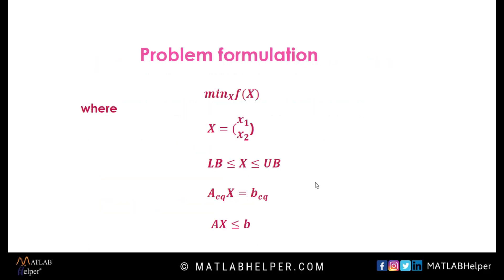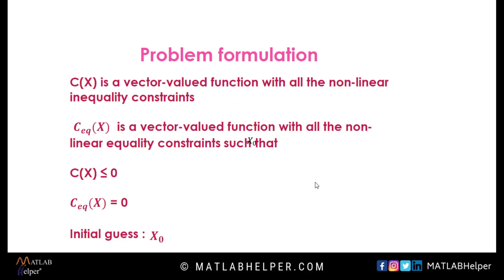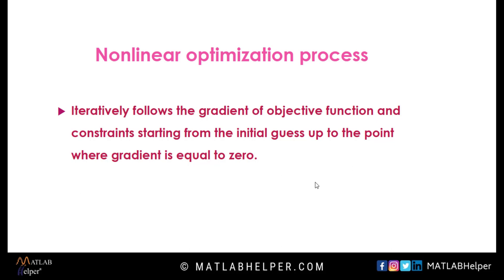The NLP solver in MATLAB uses the formulation as shown here. F is the objective function to be minimized with the design variables x1 and x2. LB and UB are the lower bound and upper bound respectively. AEQ and BEQ are the matrices specifying the equality constraints, and A and B are the matrices for the inequality constraints. In MATLAB, the nonlinear constraints are coded in a separate function with C(x) as a vector-valued function with all the nonlinear inequality constraints, and CEQ(x) as a vector-valued function with all the nonlinear equality constraints satisfying the conditions as shown here. NLP problems are iterative, which means that it starts with an initial guess as a starting point x0 for what the optimum might be.